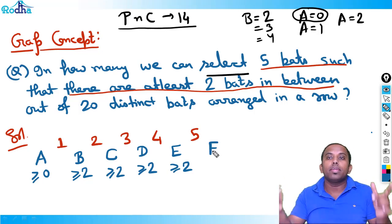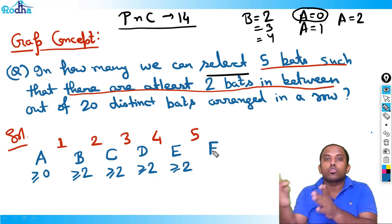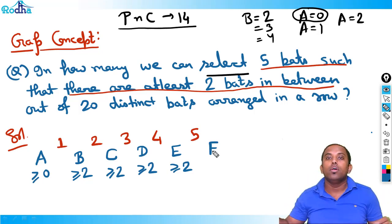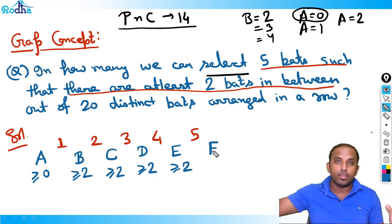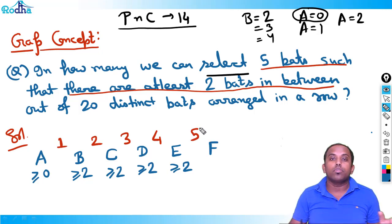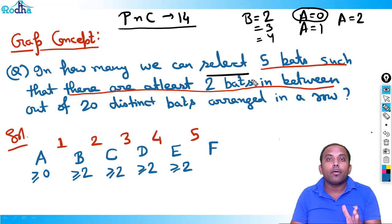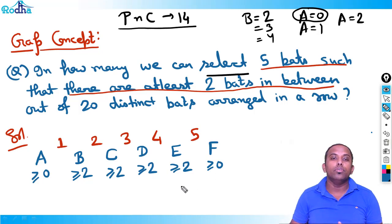Once you're picking five bats in a line, it creates six gaps: before one, between one and two, two and three, three and four, four and five, and after five. So we have six variables: A, B, C, D, E, F. F is included because my last bat could be the 15th bat — giving F equal to 5 — or the 20th bat, making F equal to 0. So F can take any value greater than or equal to 0.